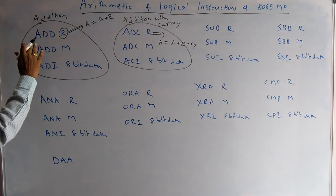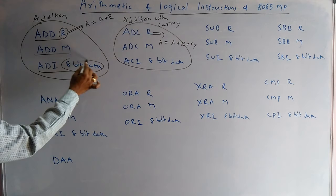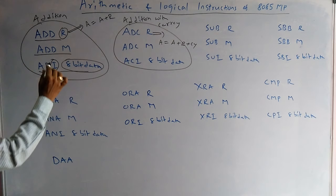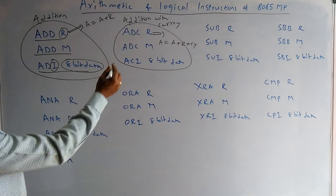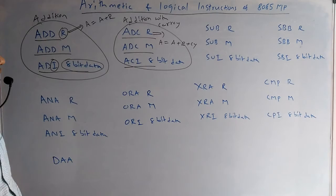Three instructions are there: ADD R, ADD M, and ADI. Immediate means whenever the instruction contains data, that is called an immediate instruction. Immediate instruction is identified by the symbol 'I' in the instruction. And there are three addition with carry instructions as well.